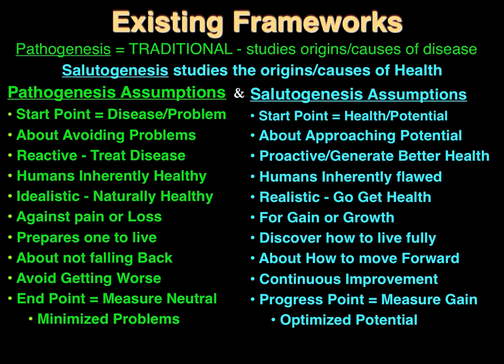Pathogenesis is measuring an end point — the outcome is generally neutral: no problem, or minimize problems. Salutogenesis, on the other hand, really has no end point; all it has is progress points in that we're moving towards our desired outcomes, measuring gains and optimizing our potential. Once we realize one goal, we realize that if we're here, we could go there — and that's where we instill that continuous and never-ending improvement.